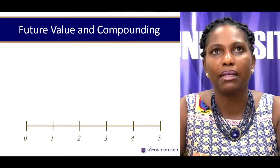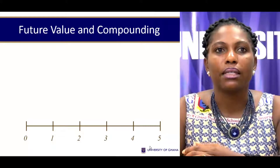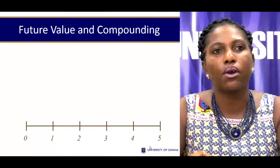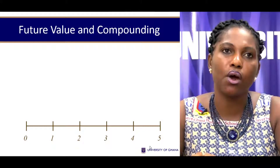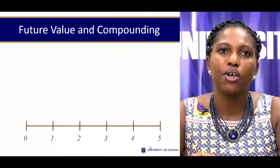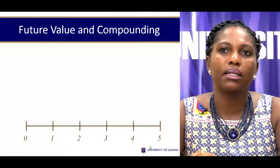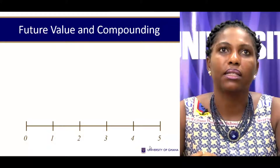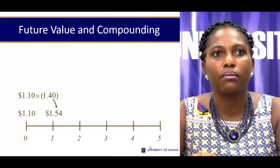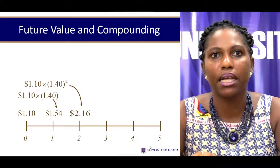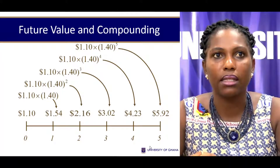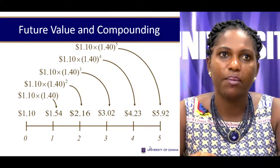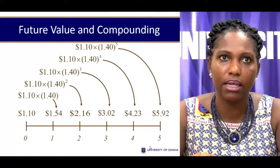To master present values and future values, you can refer to a timeline. On the timeline, time zero always refers to now, while time one refers to one period from today. Depending on the spacing, it could be a year, a month, a week, a quarter, or semi-annual. We have a case where $1.10 grows by a factor of 1.4 to $1.54, which grows to $2.16, then to $3.02, to $4.23, and then to $5.192 — this is the power of compounding.